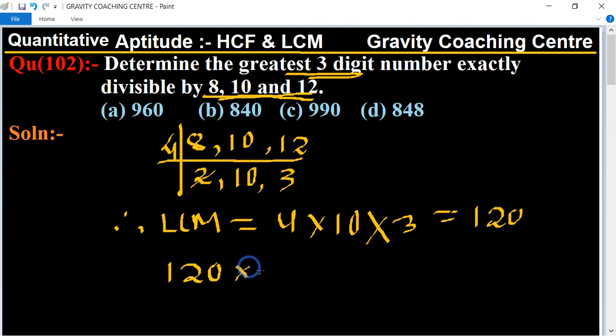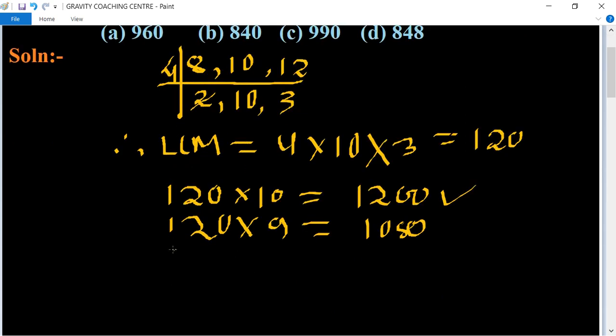Its product is 1200, which is a four digit number. Again we multiply by 9. Its product is 1080. It is also a four digit number.